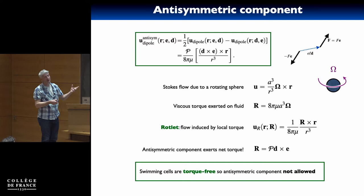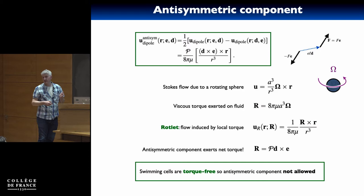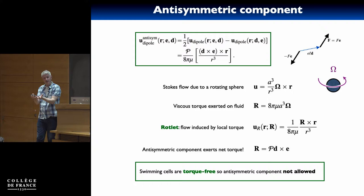Swimming cells are normally force-free and also torque-free, so that antisymmetric component is not allowed. Unless cells have other features: some cells have a torque, some have an asymmetric distribution of mass inside their body — called bottom-heavy cells — and if you tilt them away from being aligned with gravity, they experience a net gravitational torque which brings them back and which can exert a torque on the fluid. But in general, I'm going to talk about cells that are not like this.